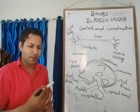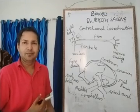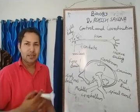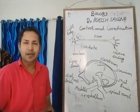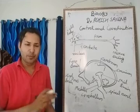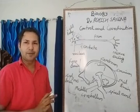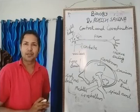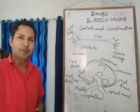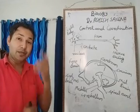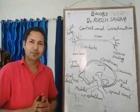Plants respond to different stimuli in different conditions. Nastic movements are non-directional and are of two types: seismonasty and photonasty. These are the different types of tropic and nastic movements.